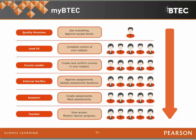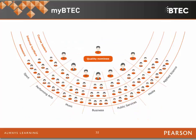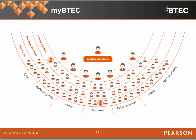To claim your role, in the top right-hand corner click on 'claim role.' That sends an email to your quality nominee and they just need to approve it. The lead IV can also authorise different roles within their subject. In some small centres, people might have to do more than one role — someone might be a course leader in sport but an assessor in business. You can have more than one role in more than one qualification and MyBTech understands that, giving you different access depending on what you need.